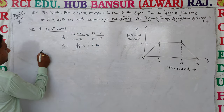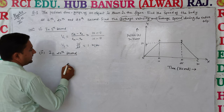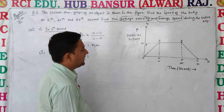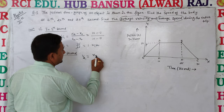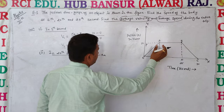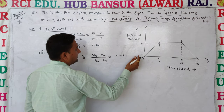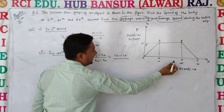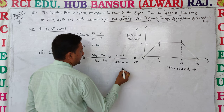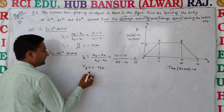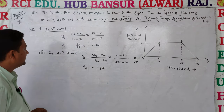Next, the speed at the 20th second. Let v2 be the speed at the 20th second. The 20th second lies between 10 and 25 seconds on the graph, which is segment A to B. Distance is (x_b - x_a) divided by (t_n - t_m). Here x_b = 10, x_a = 10, t_n = 25 seconds, t_m = 10 seconds. So v2 = (10 - 10) / 15 = 0 / 15 = 0 meter per second. At the 20th second, the body's velocity is 0.